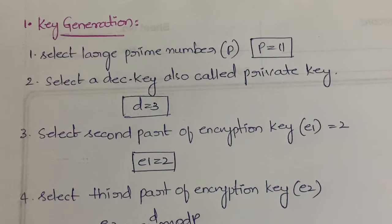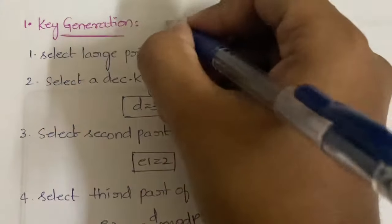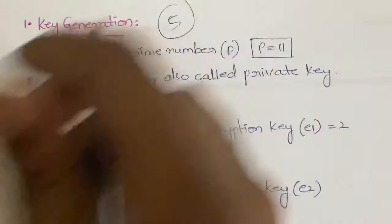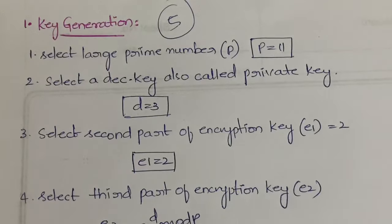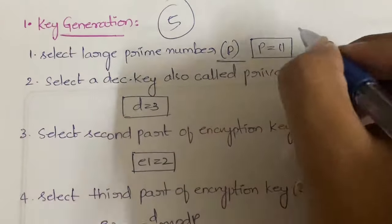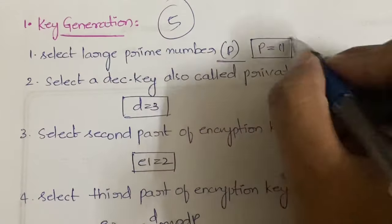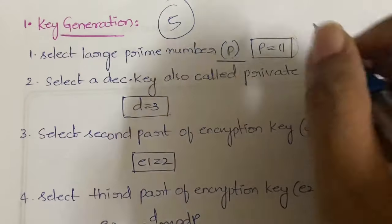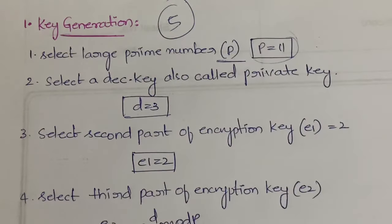In key generation there are five sub-steps. First, what you have to do is select a large prime number denoted by p. We have selected the prime number 11 — 11 is a prime number, so p = 11.